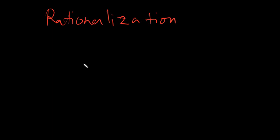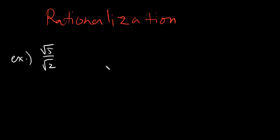Assalamualaikum Warahmatullahi Wabarakatuh. Good day again everyone. Today we will be discussing about rationalization. Rationalization is a method or a way of eliminating our radical denominator — a denominator with a radical. It's basically like this: say our answer is square root of 5 over square root of 2. This is technically not allowed, so that's where rationalization comes in. In the denominator, it's not allowed for us to have any radicals.